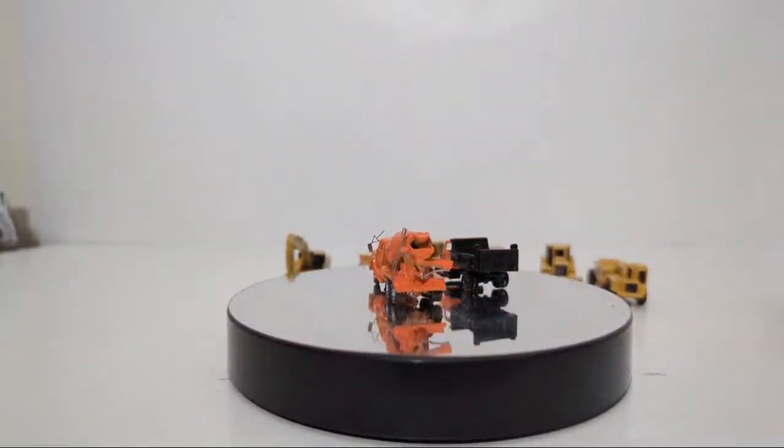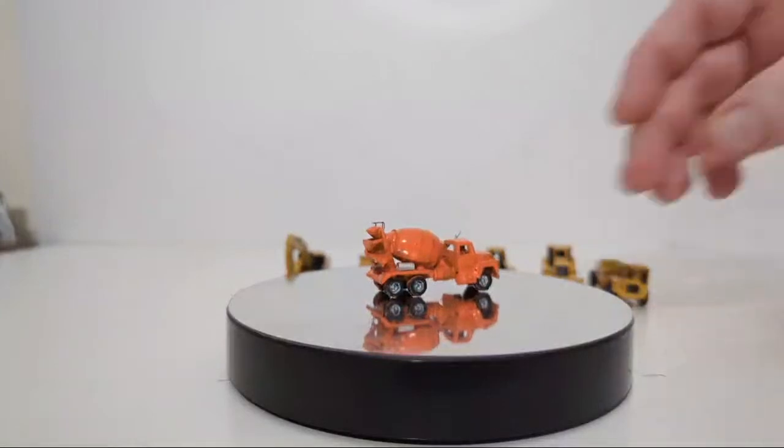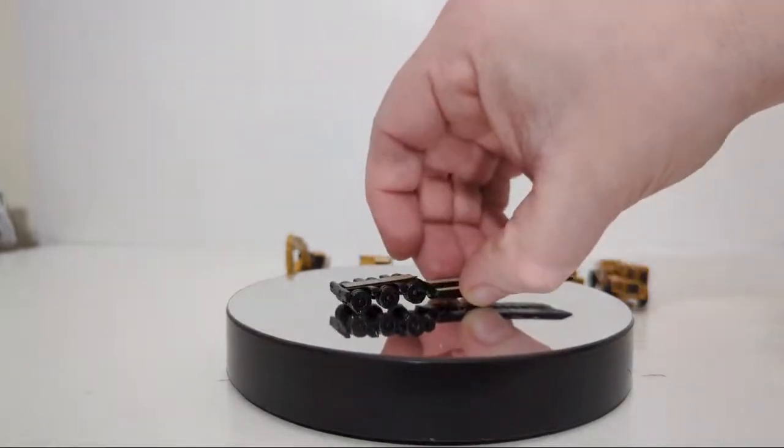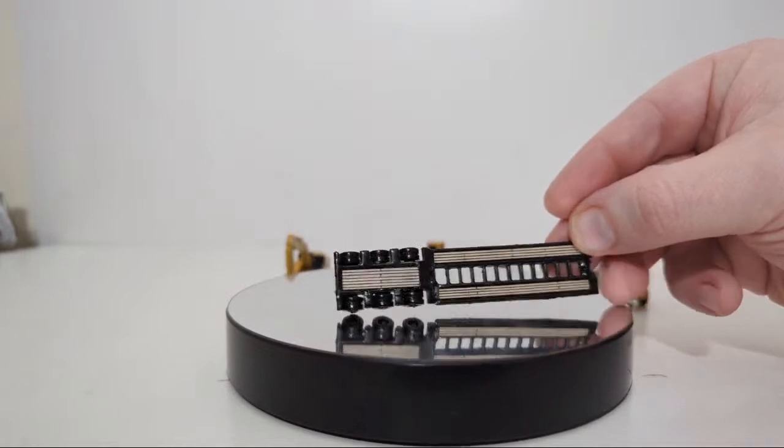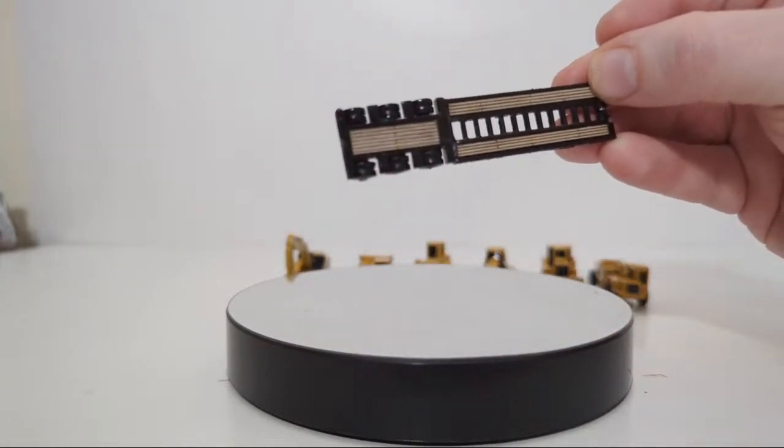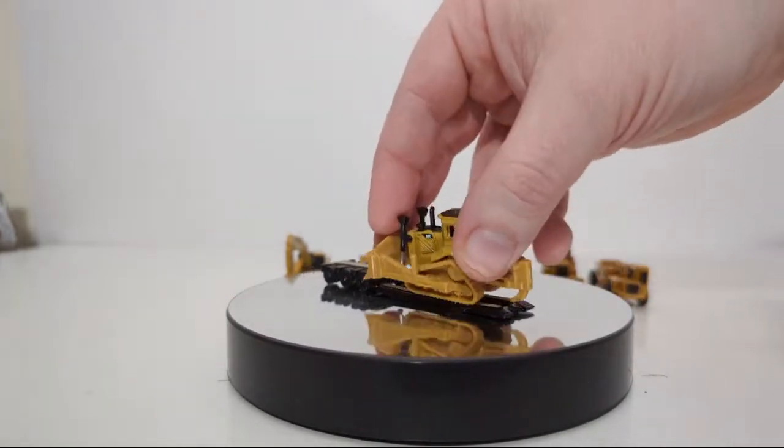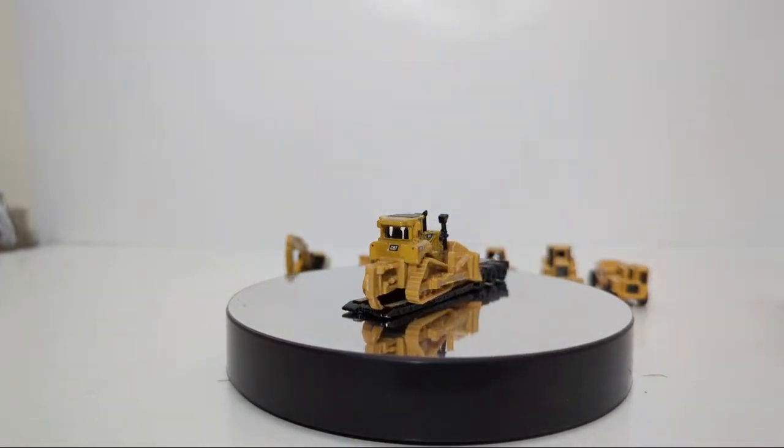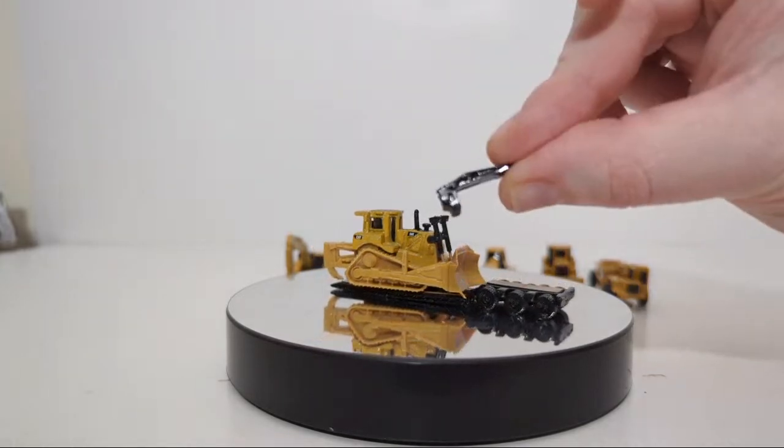Here's the Showcase Miniatures Lowboy trailer in loading mode with the gooseneck detached. You can see the simulated wood decking they include, which looks really good. Let me put a piece of heavy equipment up here for size reference.